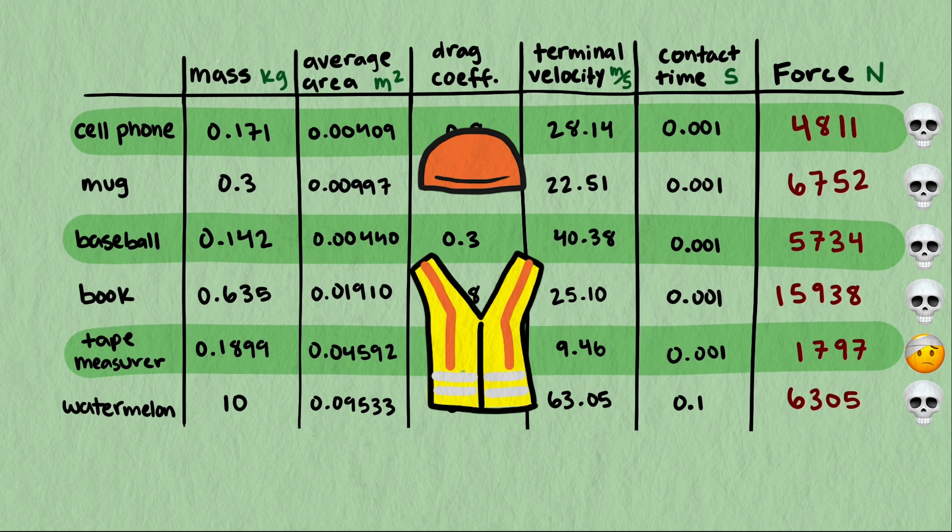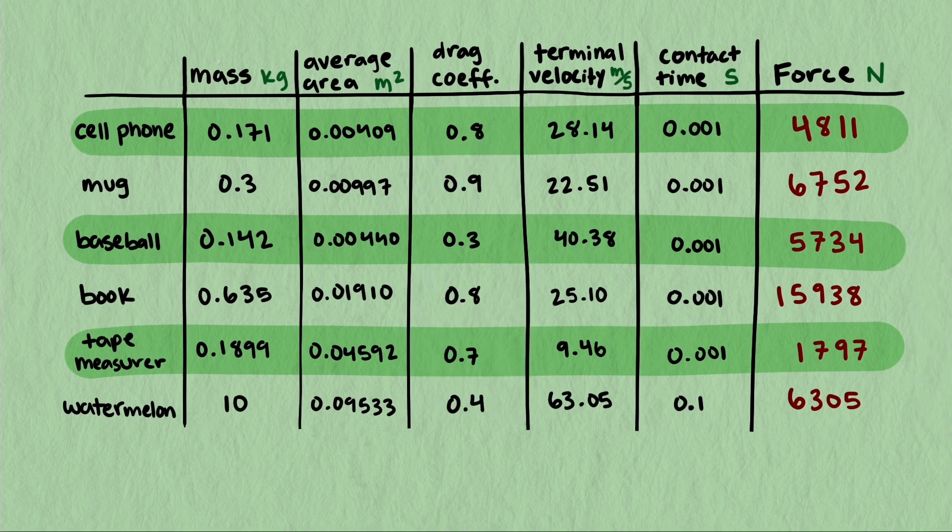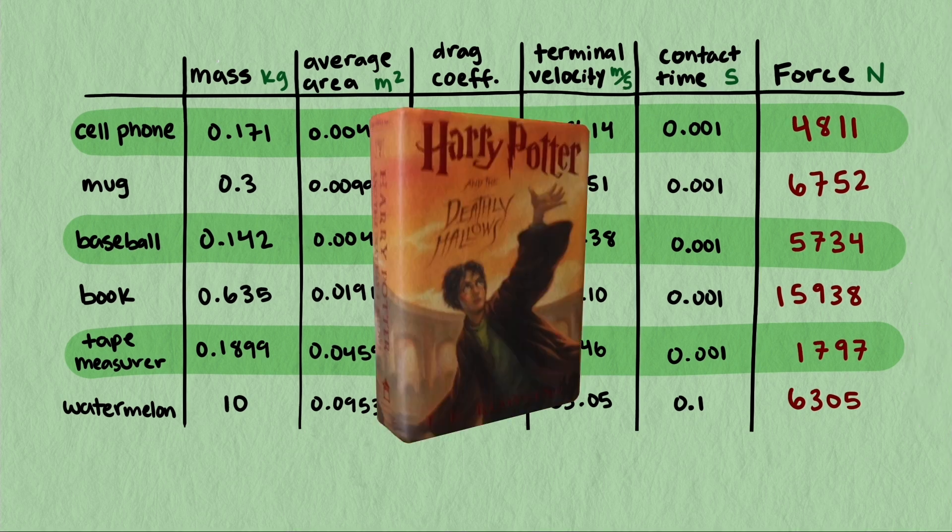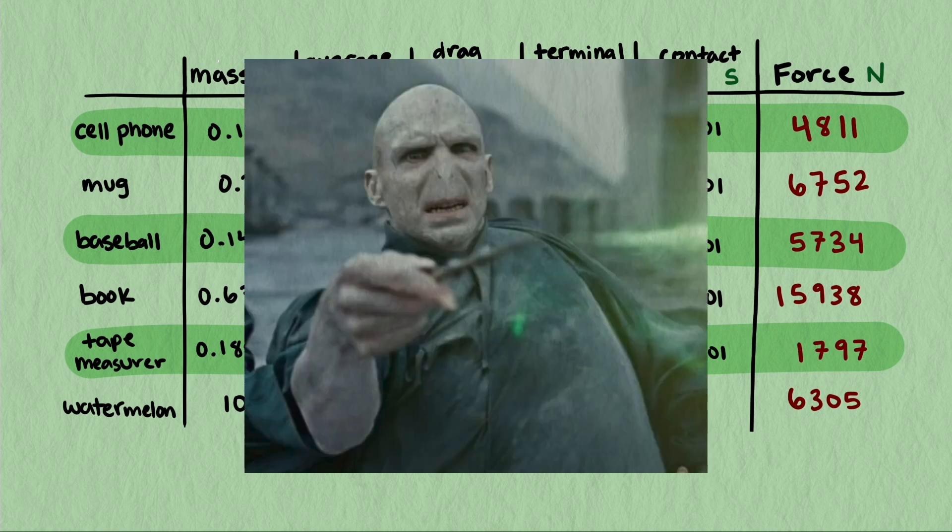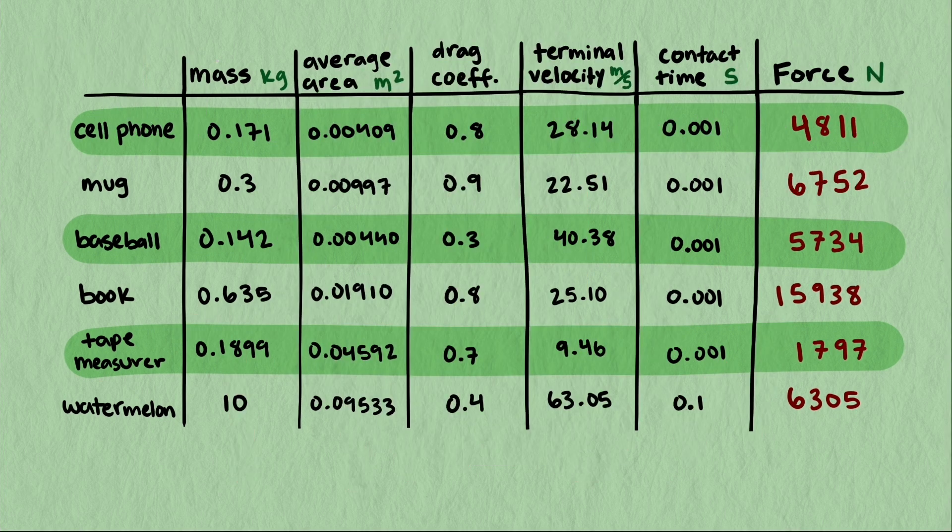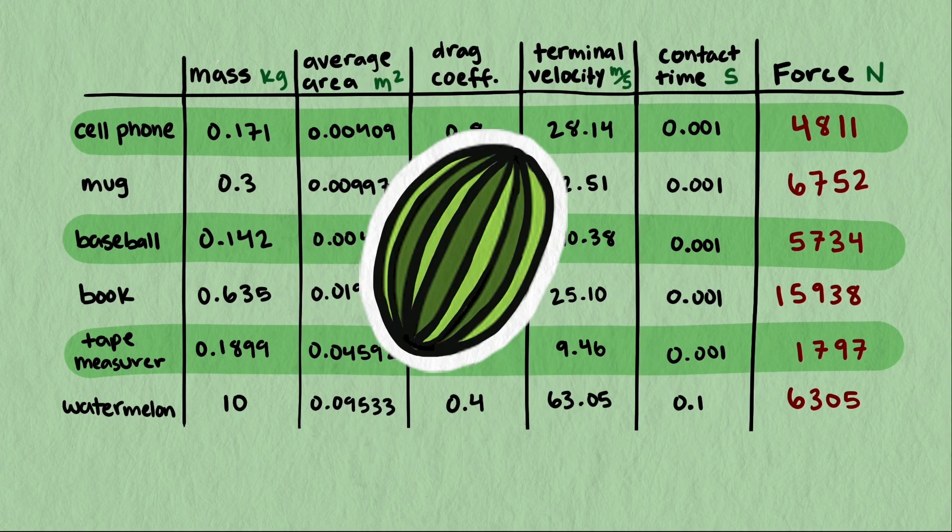I will also specify that the book we had in mind was a hardbound copy of the 7th Harry Potter book, taped shut so it's not flopping around while falling. This one is extremely dangerous, so please do not go throwing books off of buildings. Finally, I want to get a little more into that watermelon situation. You may be familiar with this clip from the Amazing Race TV show.